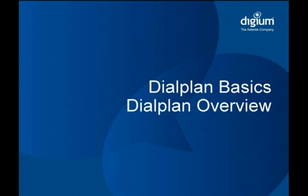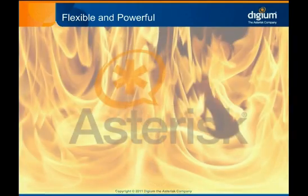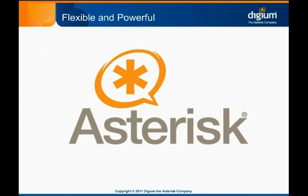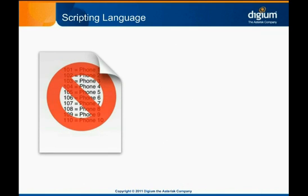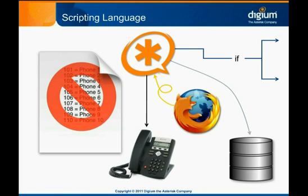We'll start by covering the basics of the Asterisk dial plan — what it is, what it looks like, and how it works. In many traditional PBXs, the dial plan is a relatively simple table that just maps extension numbers to phones. The Asterisk dial plan is far more flexible and powerful, though you'll have to progress through a learning curve before you can wield the full power it offers. In Asterisk, the dial plan isn't just a static mapping from a set of extensions to a set of phones. In fact, it's more like a scripting language capable of conditional logic and complex commands. It's certainly capable of ringing a phone when a given extension is dialed, but it can also perform any number of other actions before doing so — even actions that aren't traditionally thought of as relating to a phone, such as posting a record into a database or retrieving a web page and routing based on its contents.